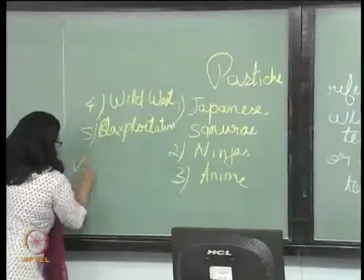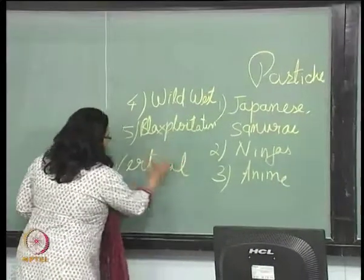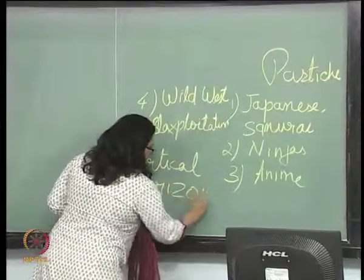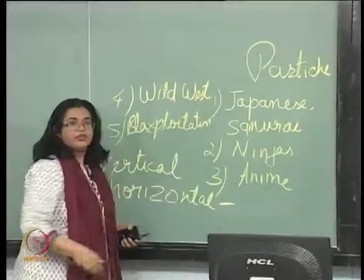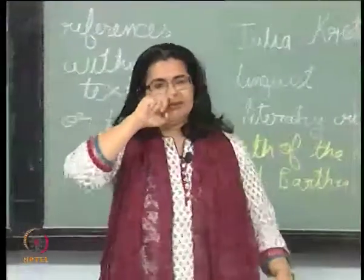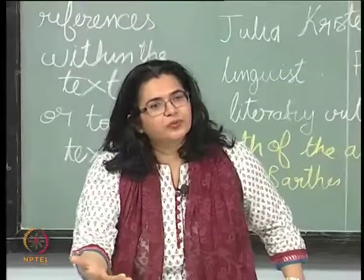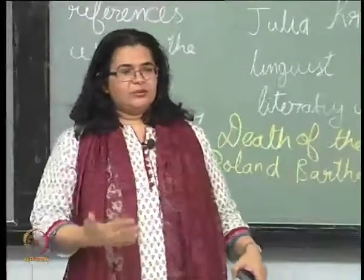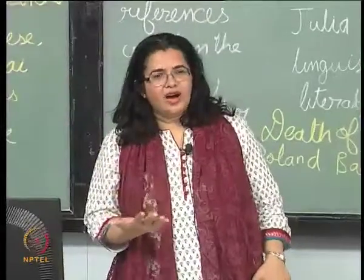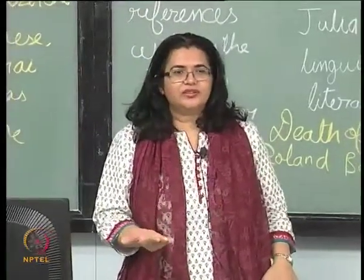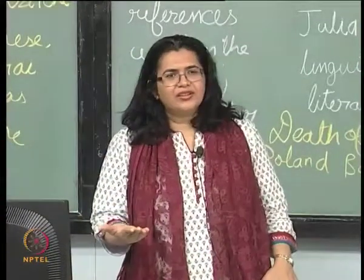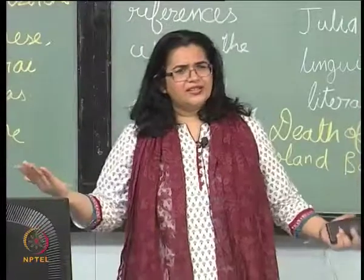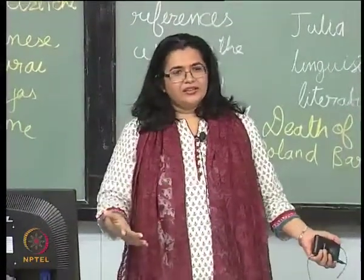Theoreticians talk about two kinds of intertextuality: vertical and horizontal. Horizontal intertextuality means books referring to other books. Vertical intertextuality means books referring to other works of art or socio-political situations — other works of art could be music, cinema, painting, anything that constitutes art.